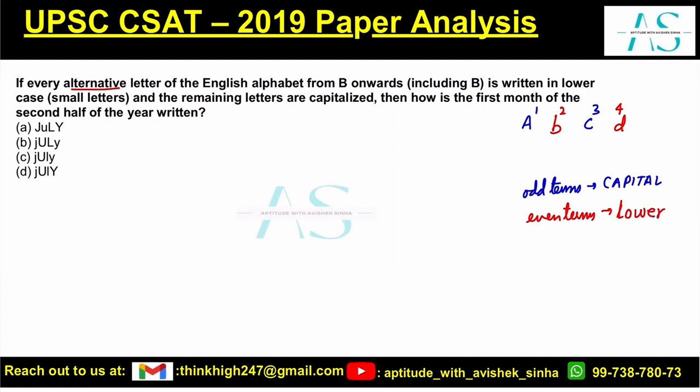The first month of the second half of the year is July. Now I will write the position codes. J has position 10, U has 21, L has 12, and Y has 25.